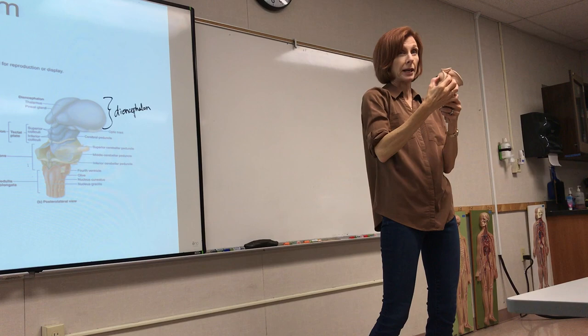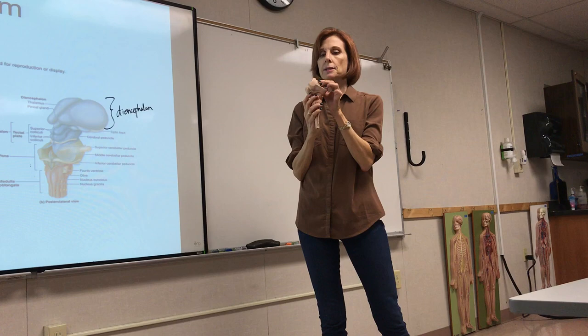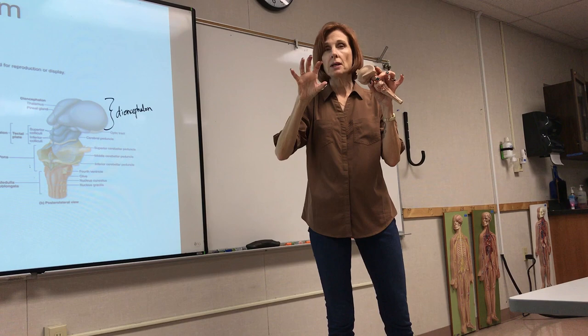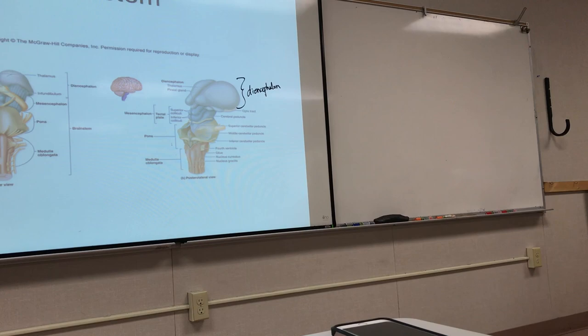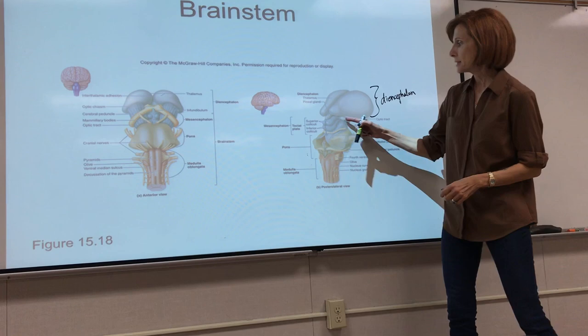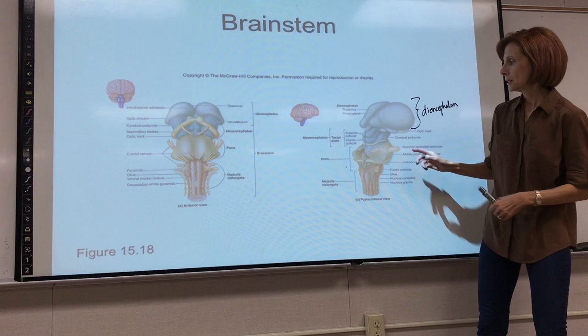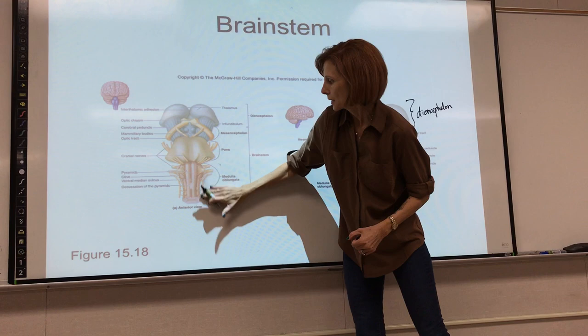You won't need to identify the basal nuclei on this model — I'd rather you identify them on a frontal section where you can see each individual nucleus clearly. Going back to the diagram and the midbrain: the brainstem has three regions. The midbrain is shown here in greenish color on the anterior and posterolateral views. Below it is the pons, and below that is the medulla, which is continuous with the spinal cord.